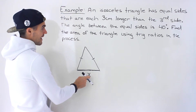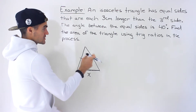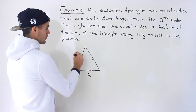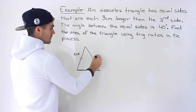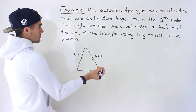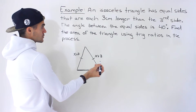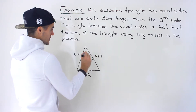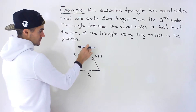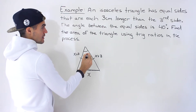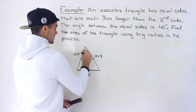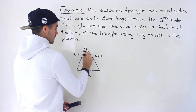So if the third side is x, then the two equal sides are each x plus 3. We're also told that the angle between the two equal sides is 40 degrees, so that angle at the top is 40 degrees.